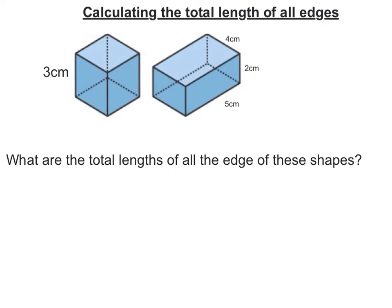For the cube, each of the lengths are three centimetres long. Counting the edges: four at the front, five, six, seven, eight towards the back, and then nine, ten, eleven, twelve at the back. So for the cube, twelve times three equals 36 centimetres — that's the total length of the edges.